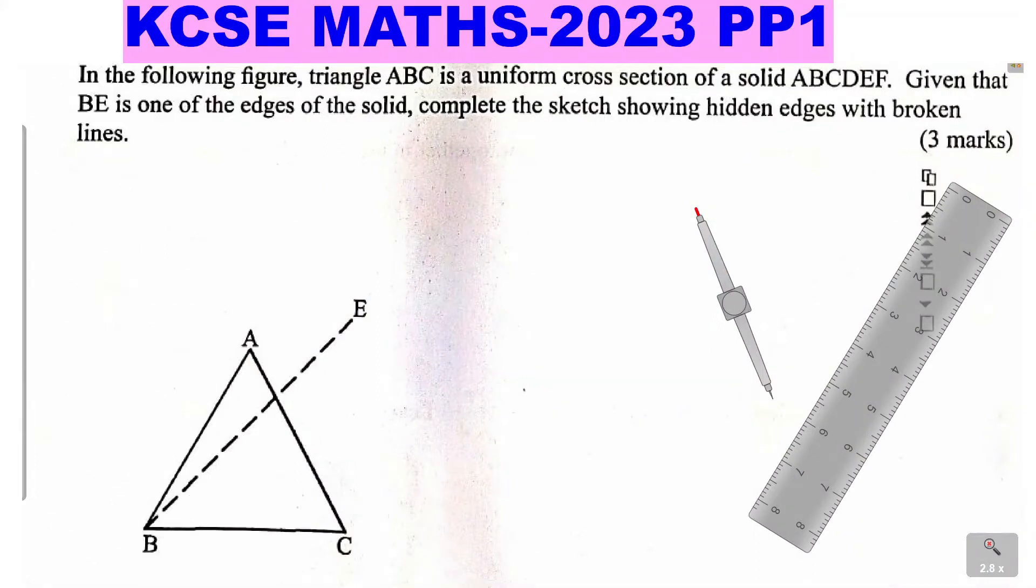Question 9. In the following figure, triangle ABC is a uniform cross-section of a solid ABCDEF. Given that BE is one of the edges of the solid, complete the sketch showing the hidden edges with broken lines. For this question, you need to do it accurately.